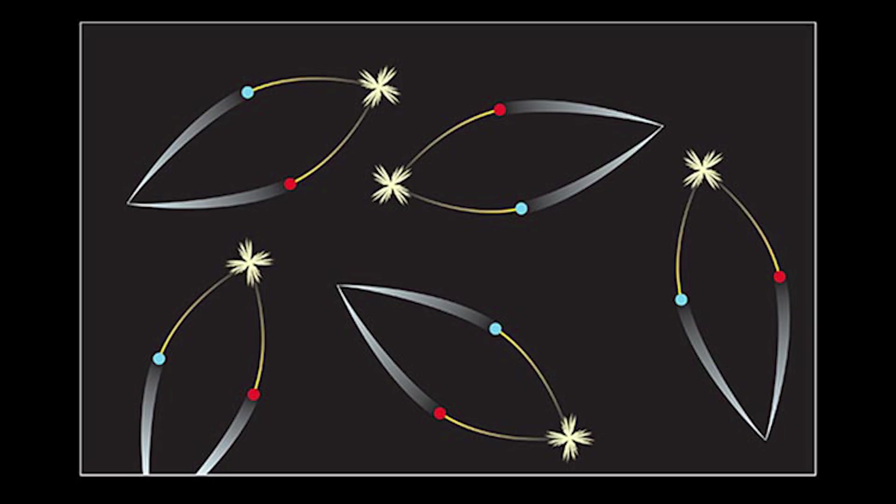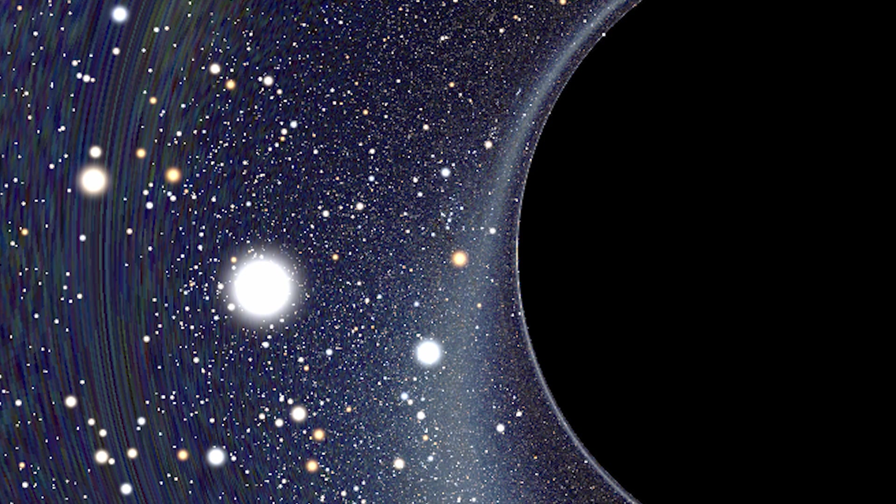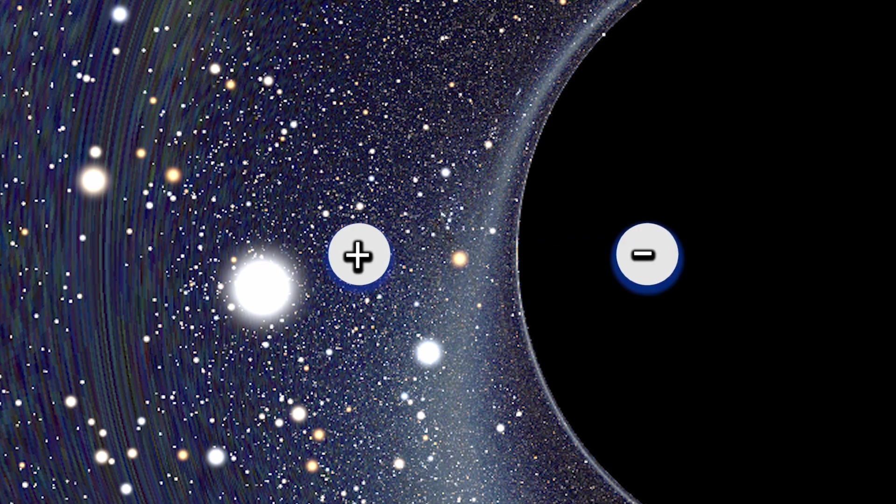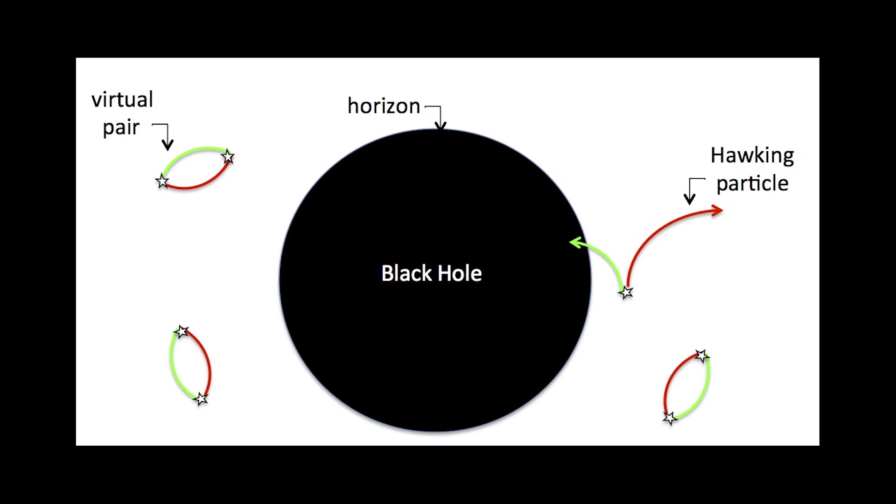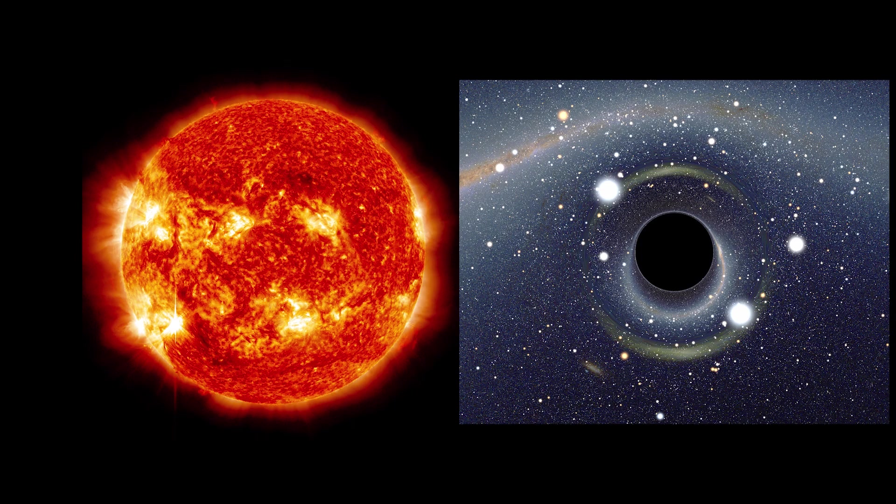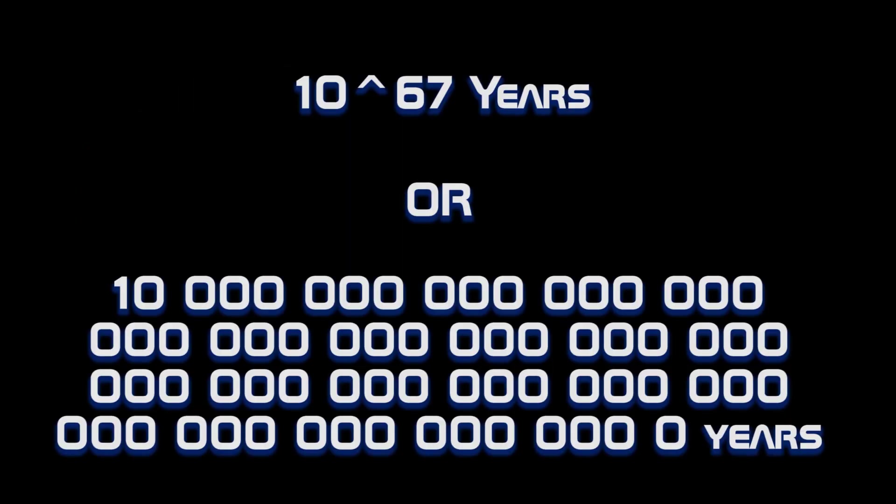But right at the edge of the black hole, these pairs can appear, and one particle is pulled into the black hole while the other one is ejected into space. This breaking of the particle-antiparticle bond results in the black hole losing energy and thus mass. For a black hole the size of the Sun, it would take a time-bending 10 to the power 67 years to evaporate.